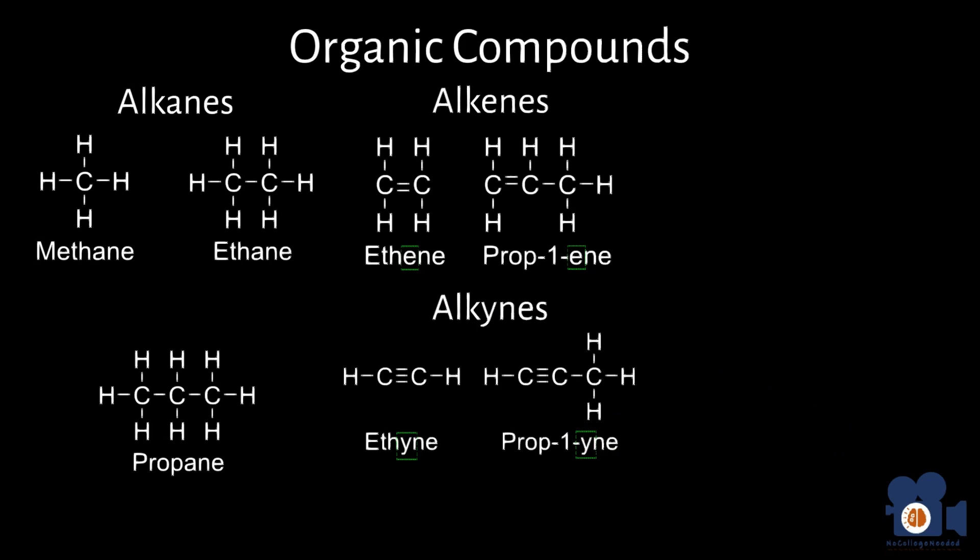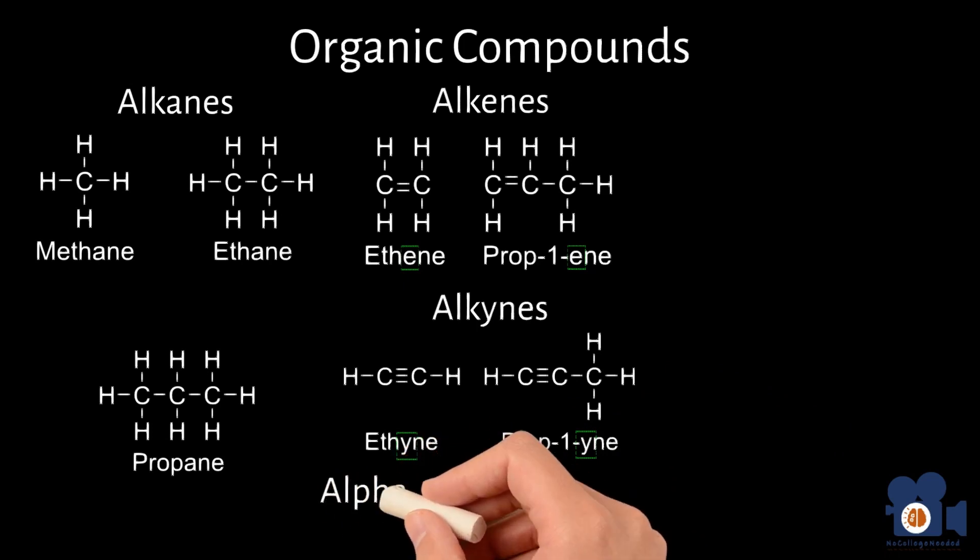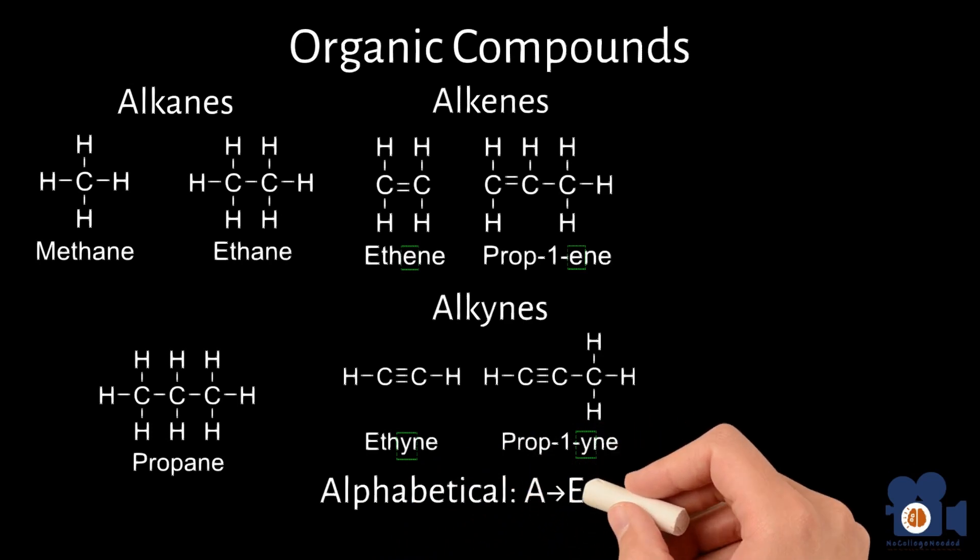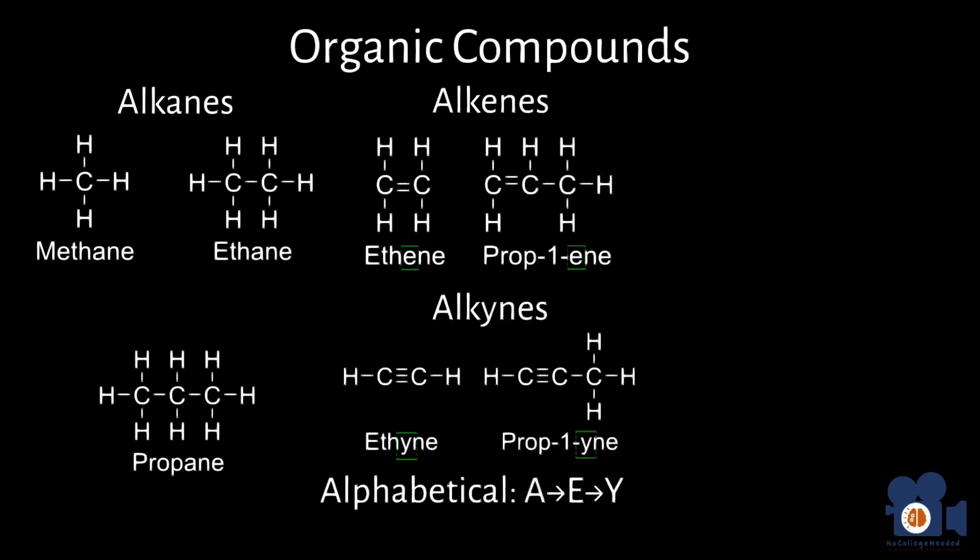Fortunately, these changes are alphabetical when going from one to three bonds, and that is a great way of remembering them, A to E to Y. As a classification system, these alkanes, alkenes, and alkynes are different functional groups and thus have different properties from one another.